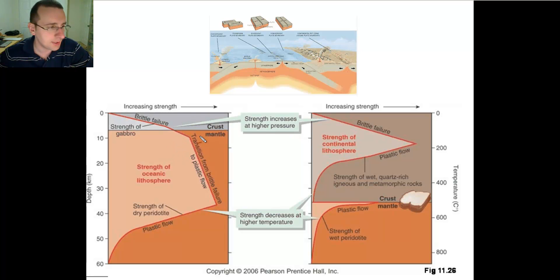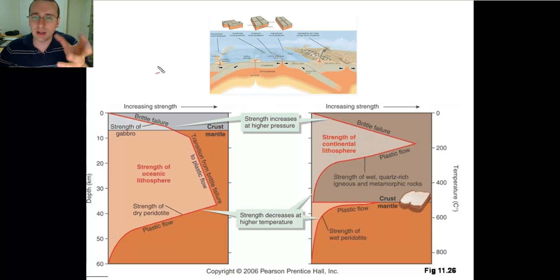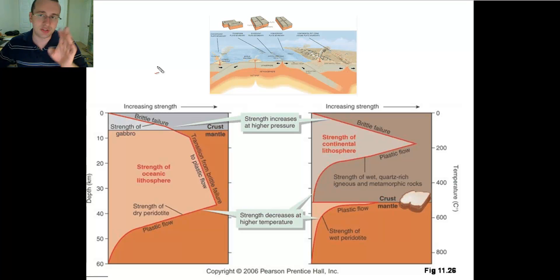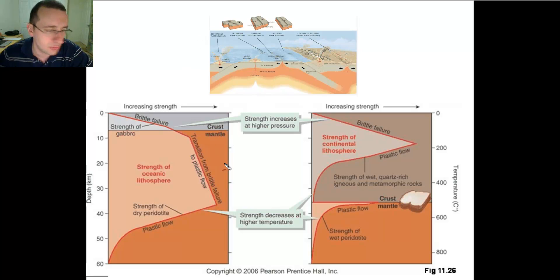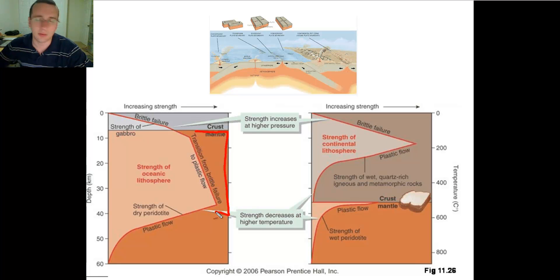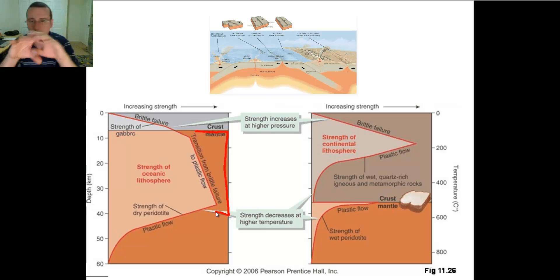The basalt then becomes gabbro and it starts to transition. You would expect it to become more and more brittle as pressure goes higher, but what actually ends up happening is that the brittleness slope decreases, and slowly you transition to a situation where you start getting into actual plastic flow. That is a large transition zone which extends from the bottom of the oceanic crust all the way to the bottom of the oceanic lithosphere — an area that's solidifying and becoming colder and colder, which is why it's still brittle.